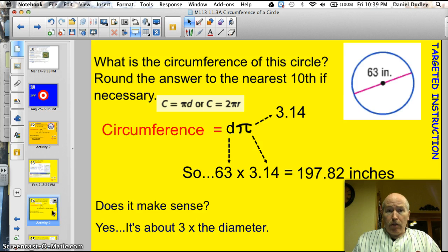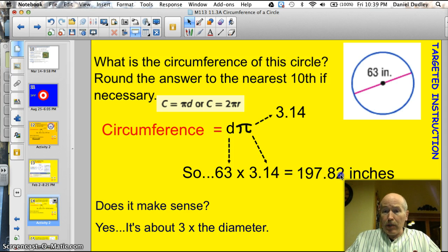What is the circumference of this circle? Round the answer to the nearest tenth, if necessary. All right. Well, we've got a circle here, and we've got the diameter is 63 inches. So, again, I remember that the circumference is equal to the diameter times pi. So, I'm just going to plug these values in. Here's 63 times 3.14, right there. If I pop that into my calculator, I get 197.82 inches, and I make sure to label it inches.